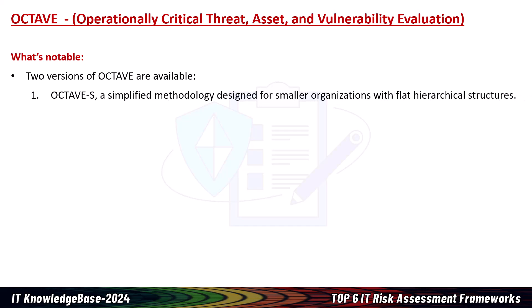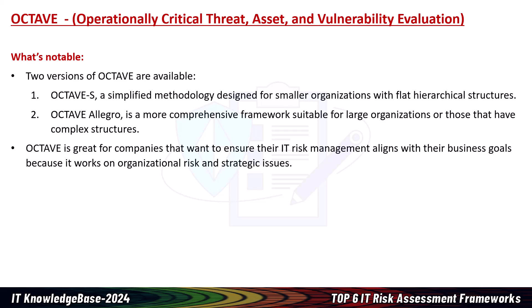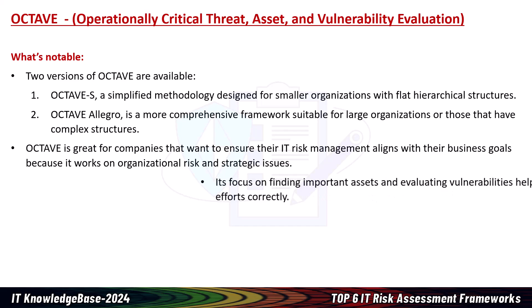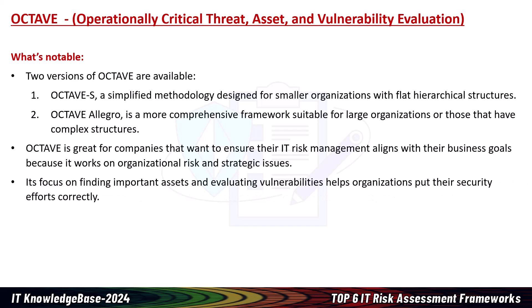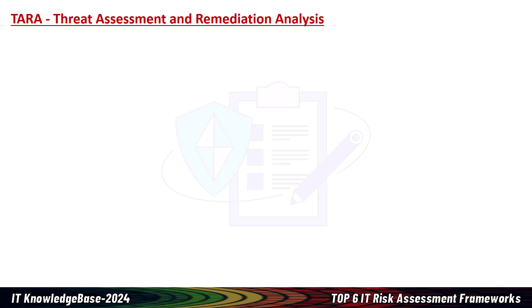Two versions of OCTAVE are available: OCTAVE-S, a simplified methodology designed for smaller organizations with a flat hierarchical structure, and OCTAVE Allegro, a more comprehensive framework suitable for large organizations or those with complex structures. OCTAVE is great for companies that want to ensure their IT risk management aligns with business goals. Because it works on organizational risk and strategic issues, it focuses on finding important assets and evaluating vulnerabilities, helping organizations direct their security efforts correctly. The framework identifies and manages risk from an organizational point of view, providing insight into how different risks can impact various business operations.